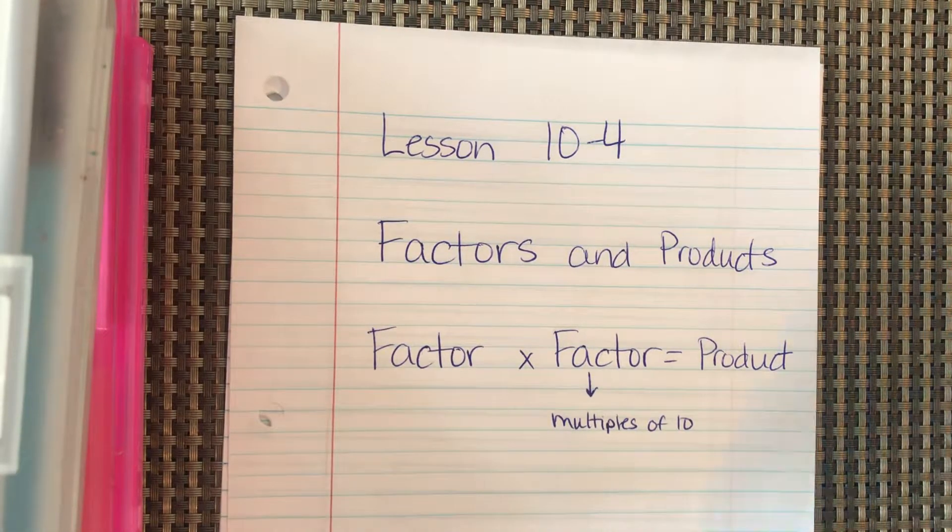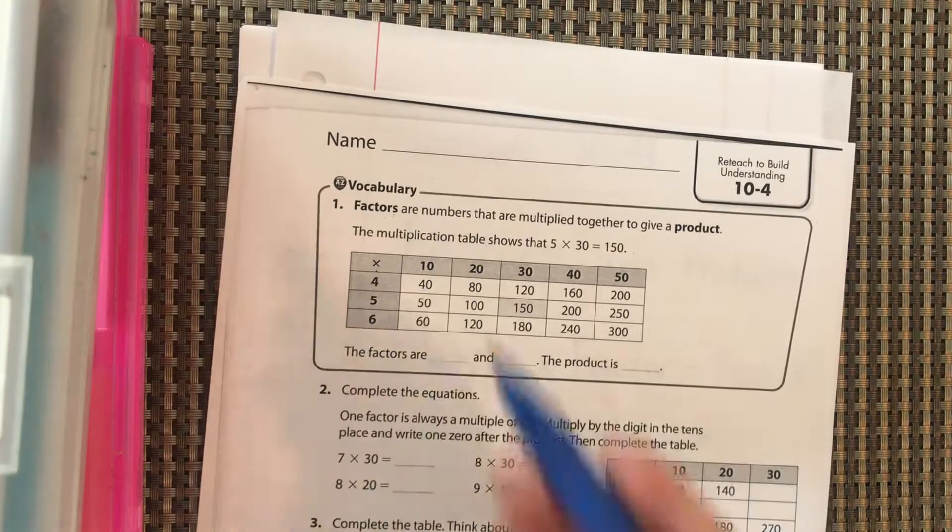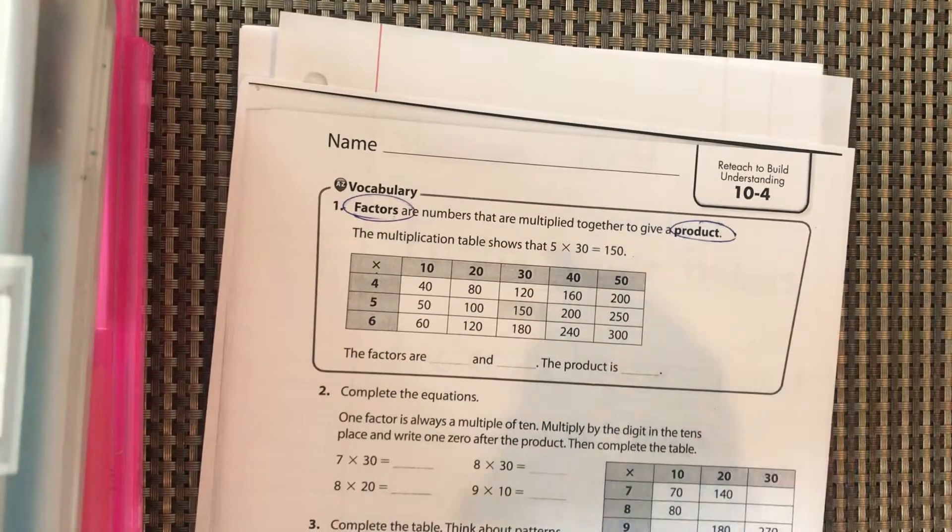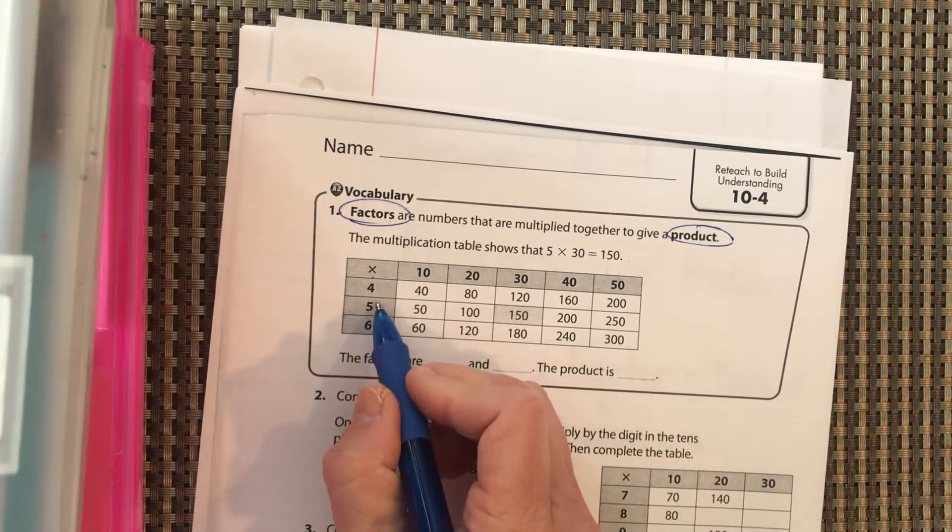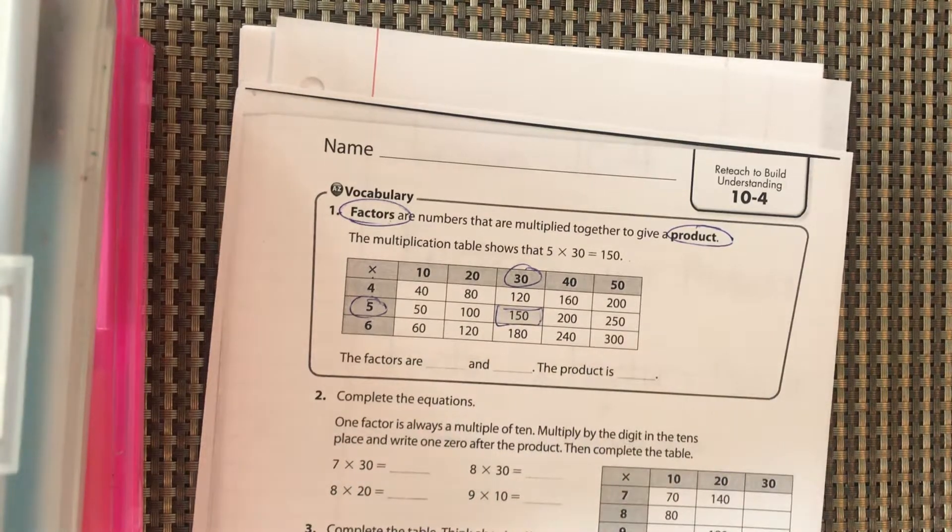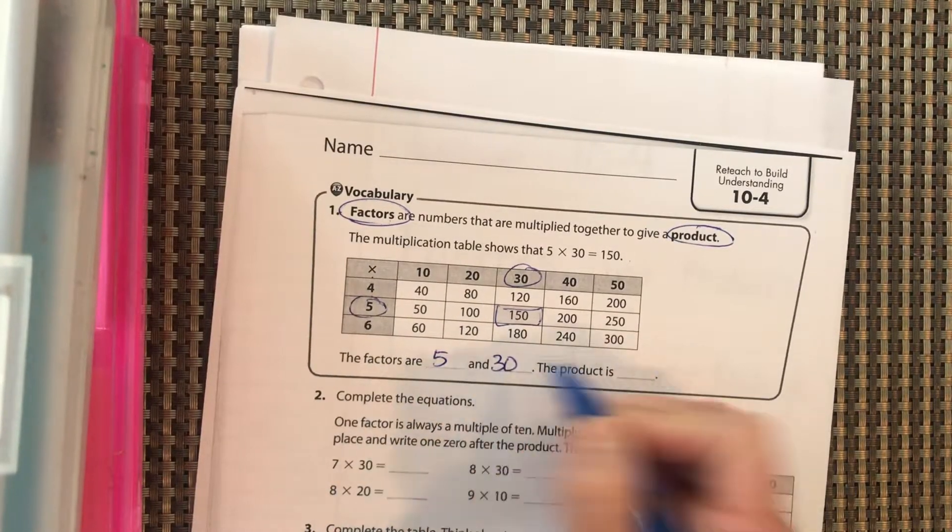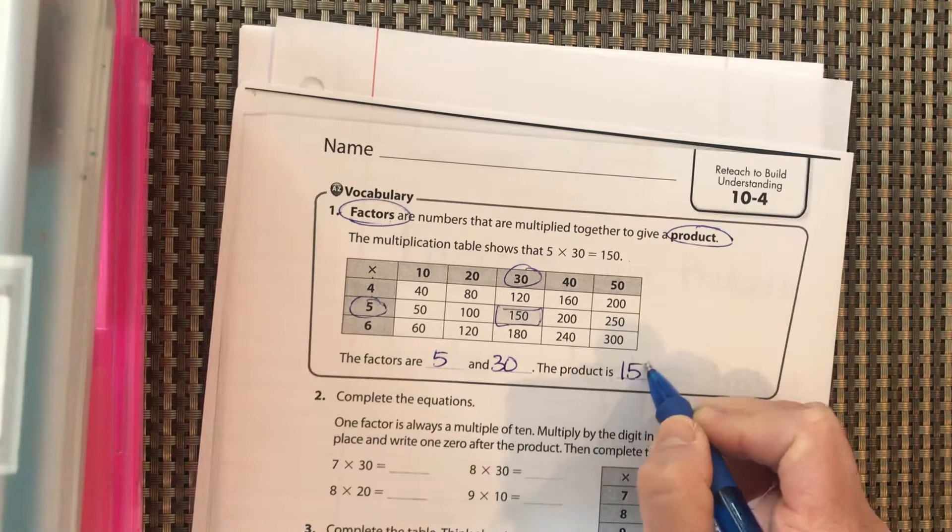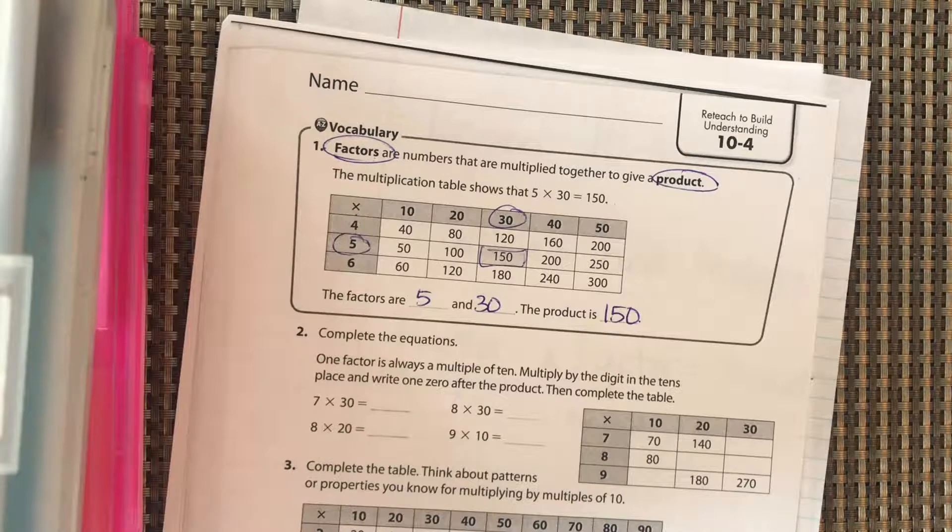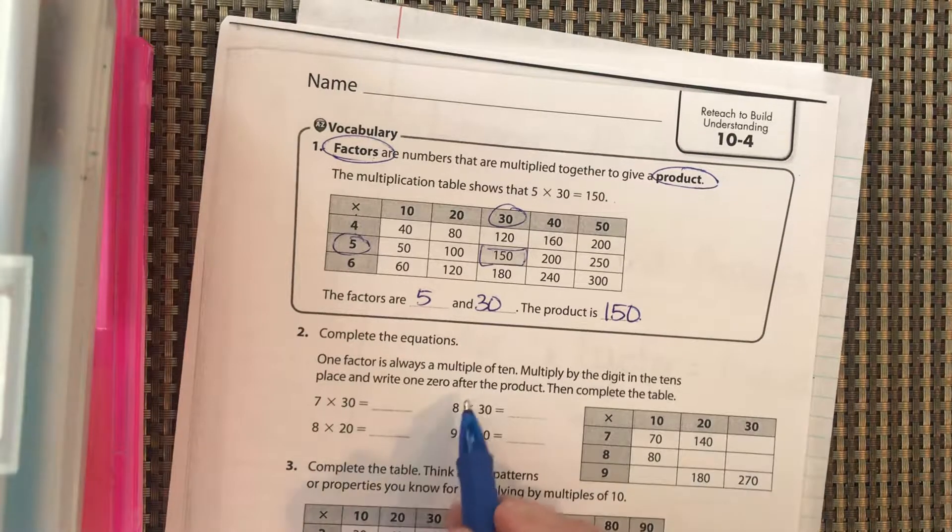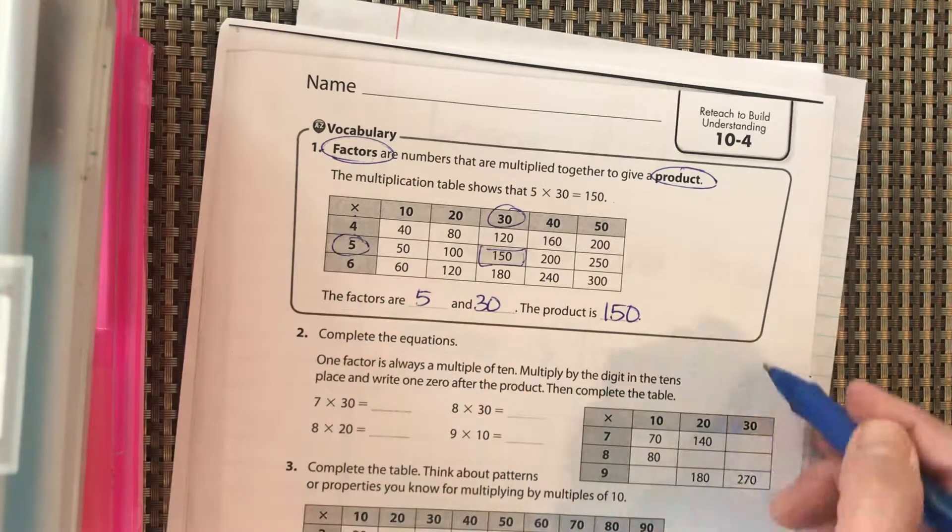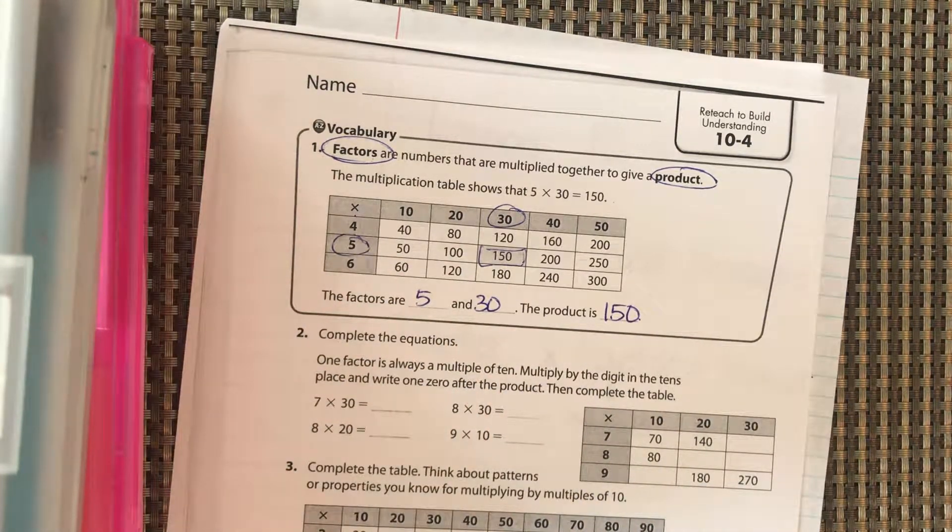Okay, so let's take a look at our sheet here. Factors are the numbers that are multiplied together to give a product. This multiplication table shows that five times 30 is equal to 150, so the factors are five and 30 and the product is 150. So one factor is always a multiple of 10 in this situation—not always in life, but in this problem right here, in this little world, one of the factors is a multiple of 10.